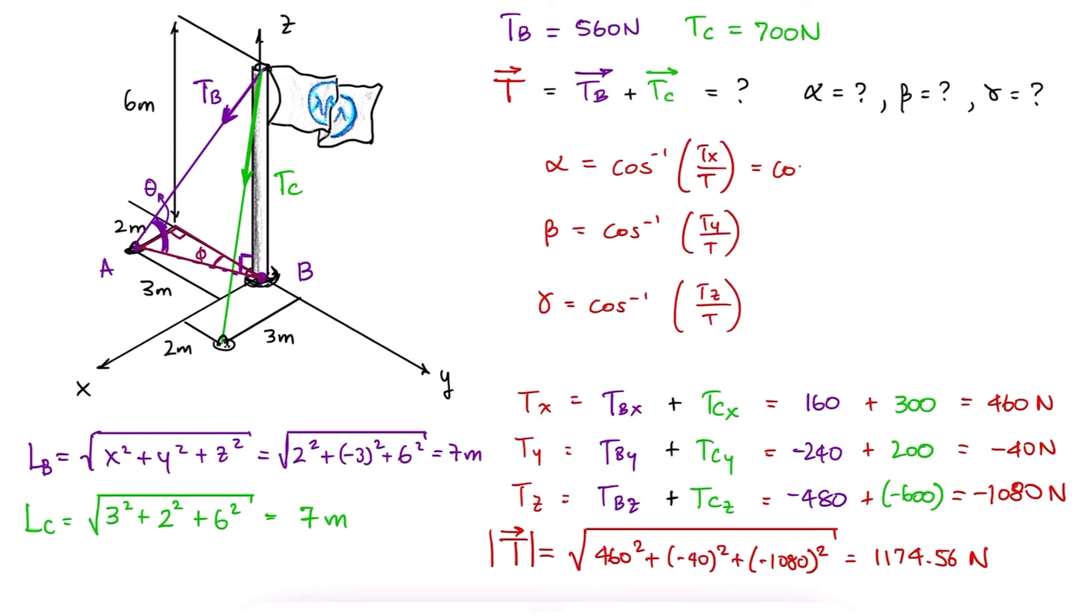The coordinate direction angles, just like it was explained during the previous example, would be found using the inverse of cosine.